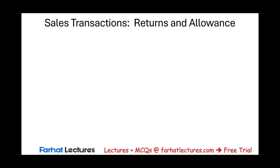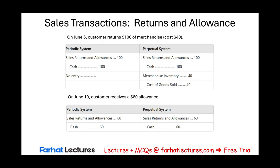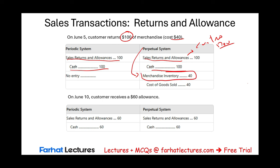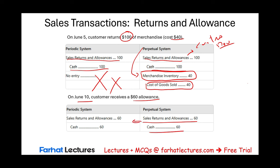For sales returns and allowances: assuming a customer returned $100 worth of merchandise at cost $40, we debit Sales Returns and Allowances and credit cash under both systems. Under a perpetual system, we also put inventory back and reverse cost of goods sold. Under a periodic system, we don't keep track of inventory or cost of goods sold in real time — this illustrates the lack of real-time information about inventory and cost of sales for the periodic system.